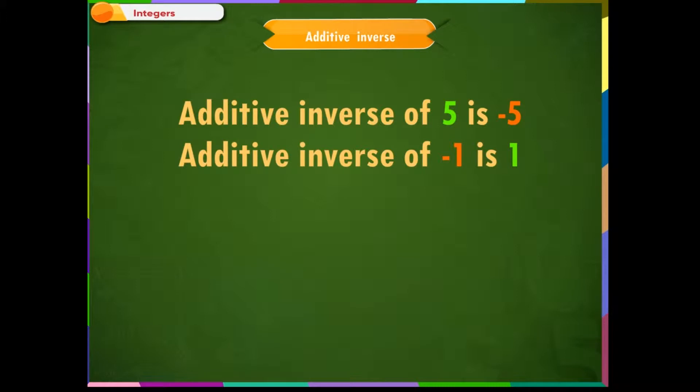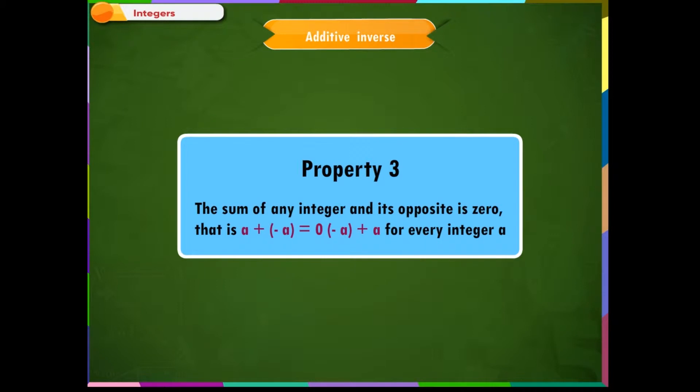If we generalize this, we get property 3, which says the sum of any integer and its opposites is 0. That is, A plus minus A is equal to 0, minus A plus A for every integer A. Here, minus A is called the additive inverse of A.